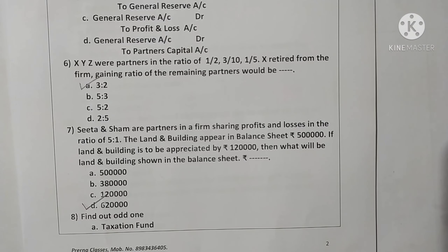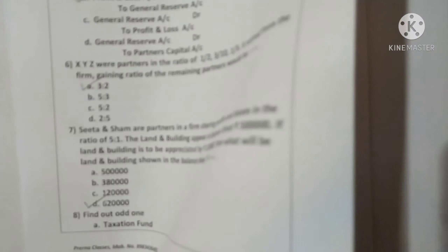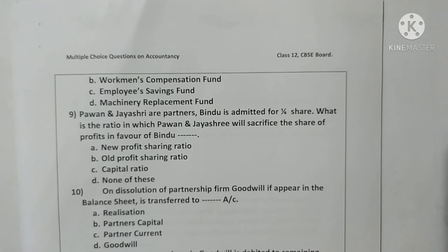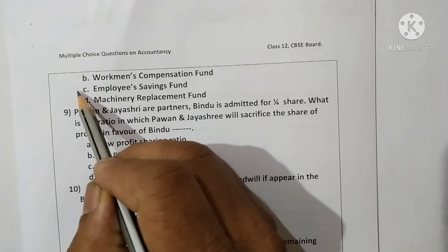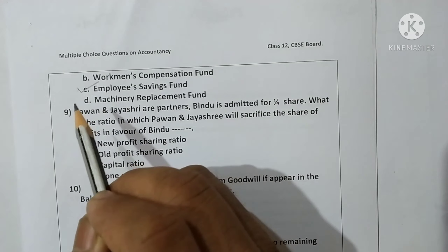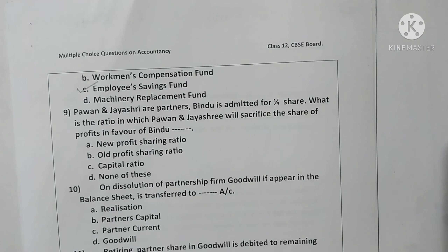Question eight — find out the odd one: options are taxation fund, workmen's compensation fund, employee saving fund, and machinery replacement fund. The correct answer is option C — employee saving fund is the odd one out.